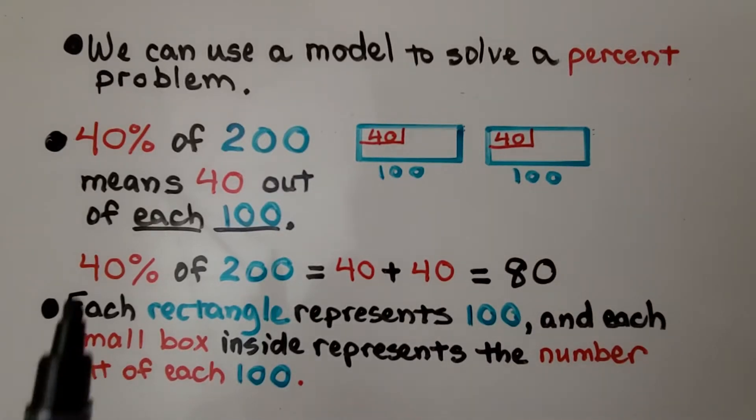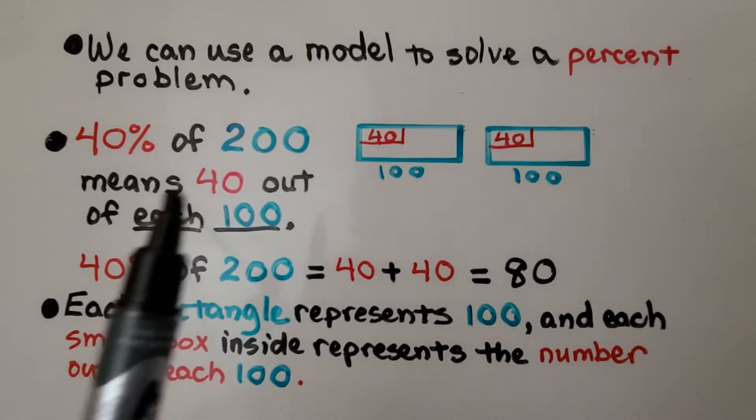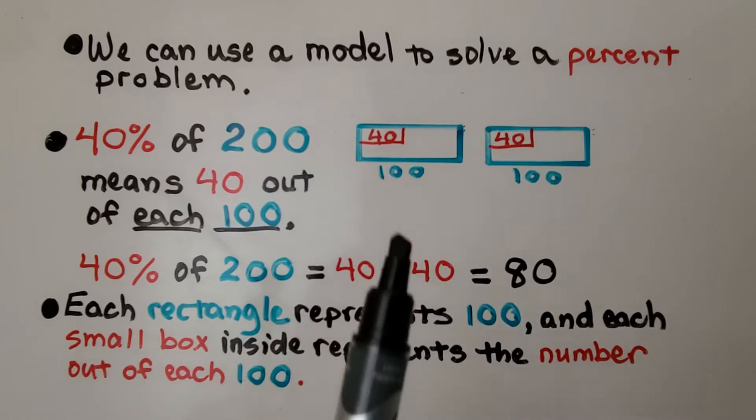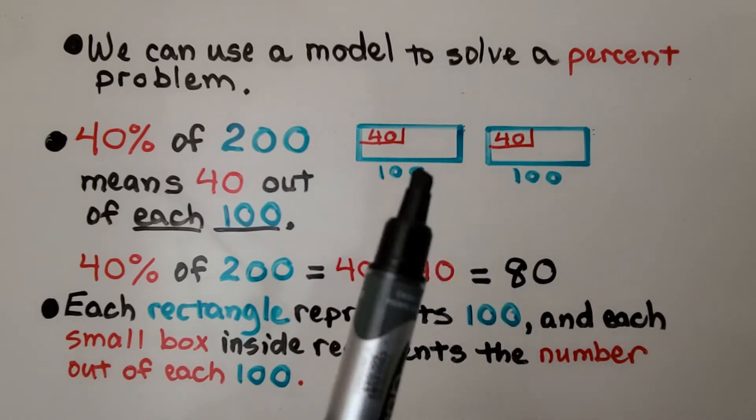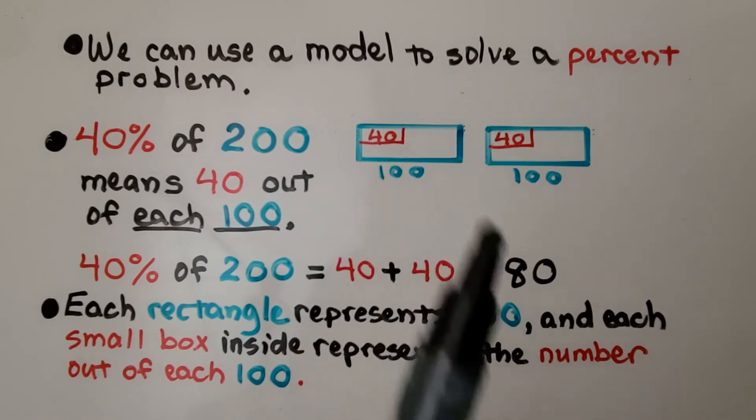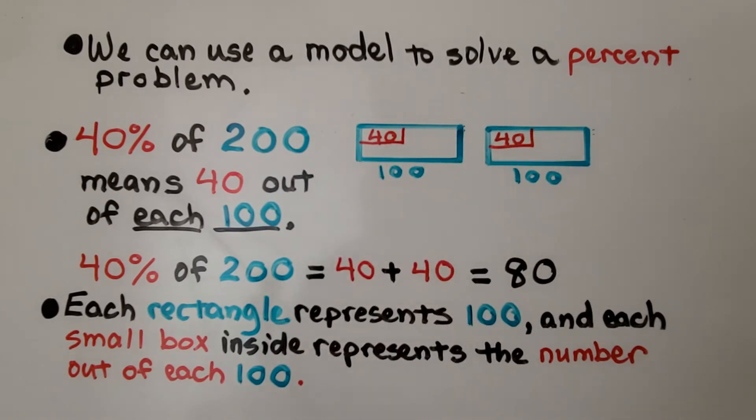If we need to find 40% of 200, 40% of 200 means 40 out of each 100. We can make a rectangle for each 100 and draw a little box with a 40 in each one. Each rectangle represents 100 and each small box inside represents the number out of each 100. If we have 40 and 40, that's 80. 40% of 200 is equal to 80.